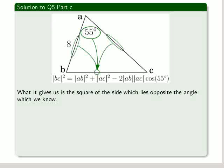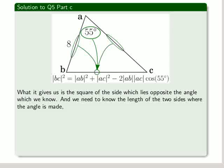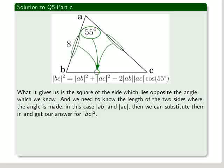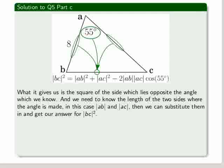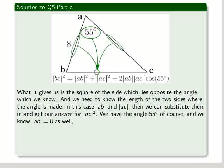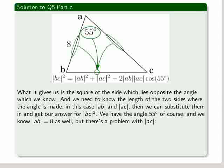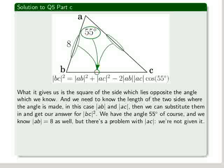What it gives us is the square of the side which lies opposite the angle which we know. And we need to know the length of the two sides where the angle is made. In this case, they are AB and AC. Then we can substitute them in and get our answer for BC, which is what we're asked for in part 1. We have the angle 55 degrees, and we know AB equal to 8 as well, but there's a problem with AC. We're not given it.